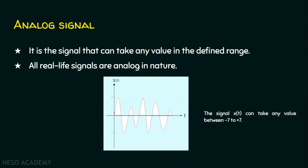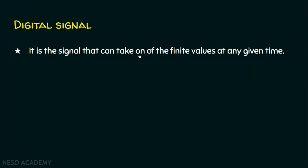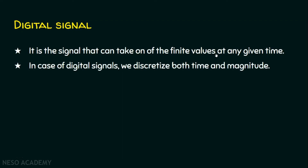On the other hand, we have a digital signal. It is the signal that can take one of the finite values at a given time. At a given time, if it can take only finite values, then it will be a digital signal, because in a digital signal we discretize both time and magnitude — that is, size or quantity.